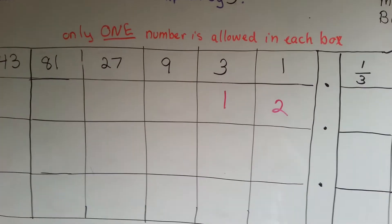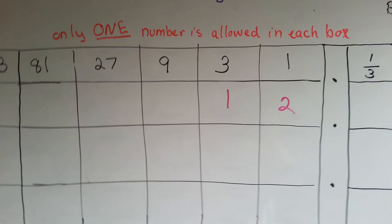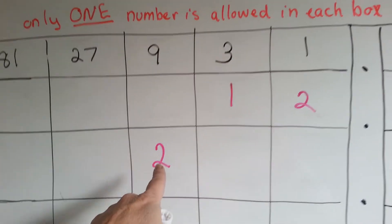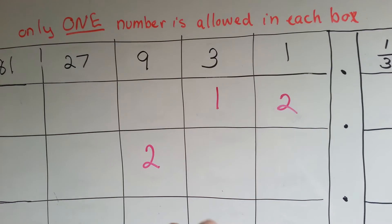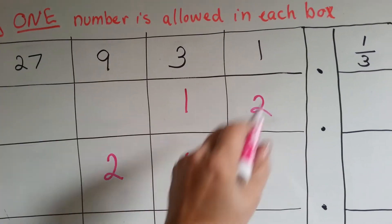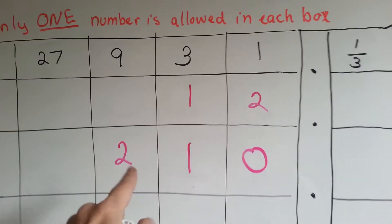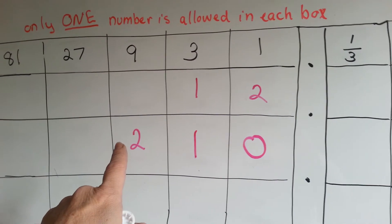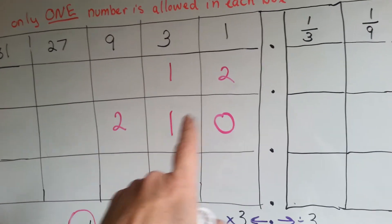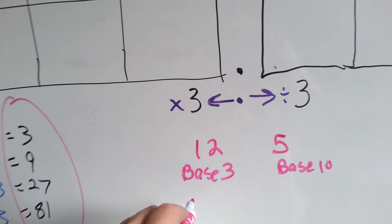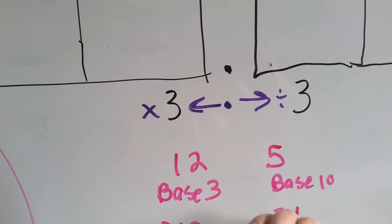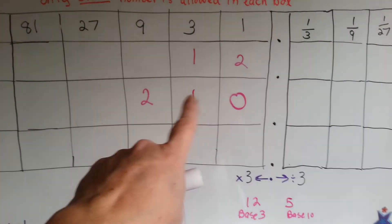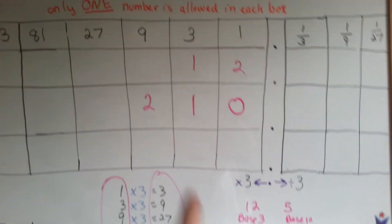How would you write 21? Well, you'd have two 9s, which is 18, 19, 20, 21. But you'd have to put a 0 in the ones place. So 21 would be written as 2, 1, 0. Isn't that odd? 2, 1, 0 is equal to 21 in base 3.